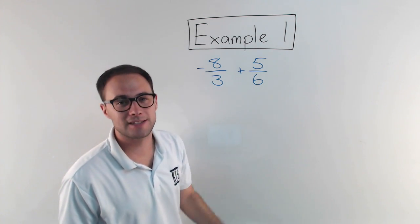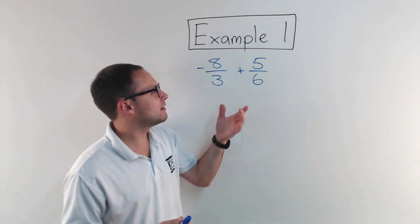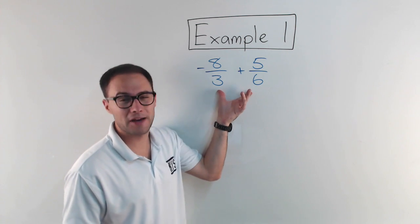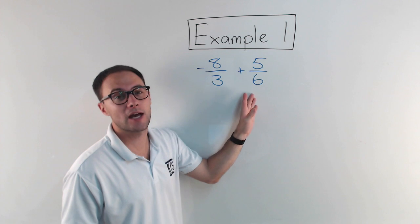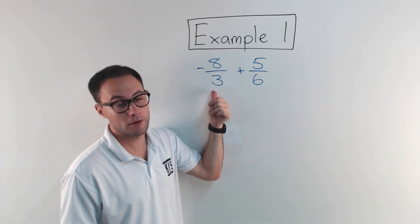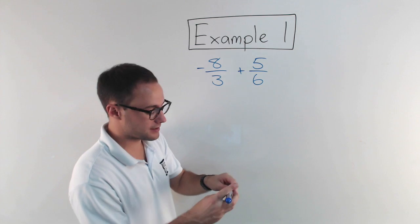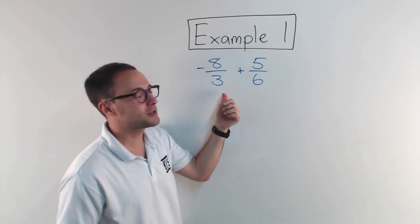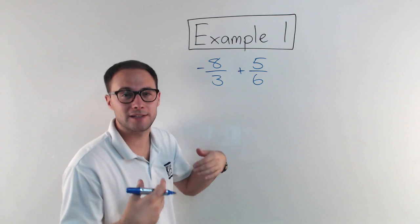Negative eight-thirds plus five-sixths. Well, if you know adding fractions or subtracting fractions, you have to have a common denominator. So right now, we can't add these together because that has a denominator of three and that's at six. So my first step is to make common denominators. My least common multiple of three and six is six, so that's going to be what I want my common denominator to be.